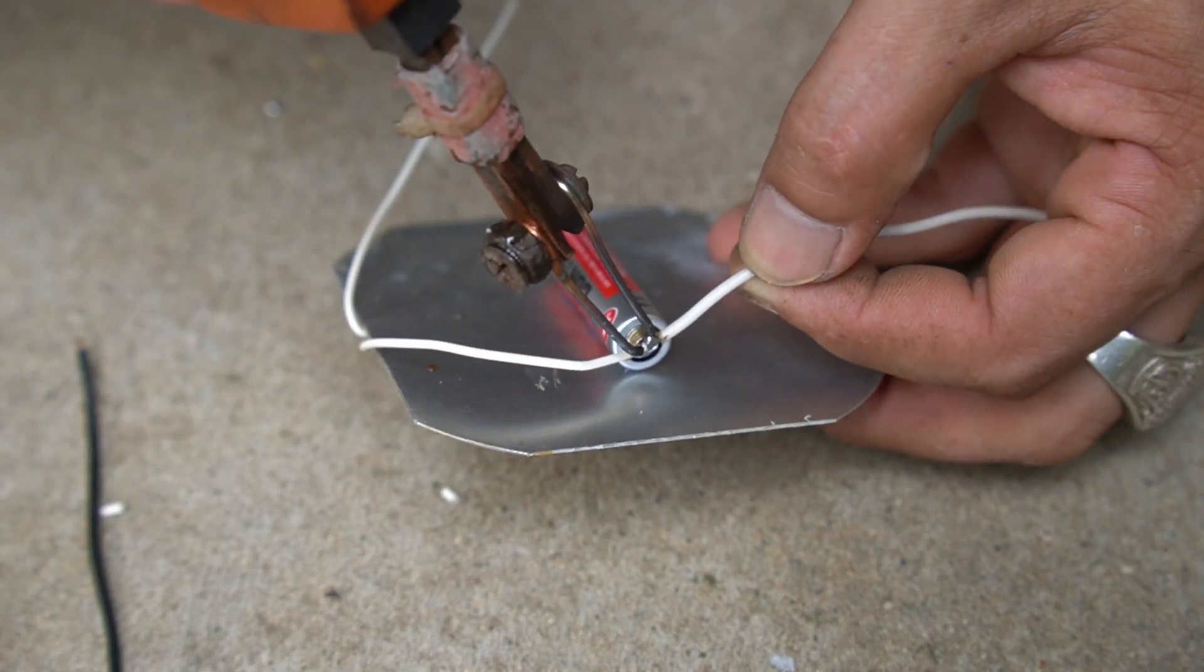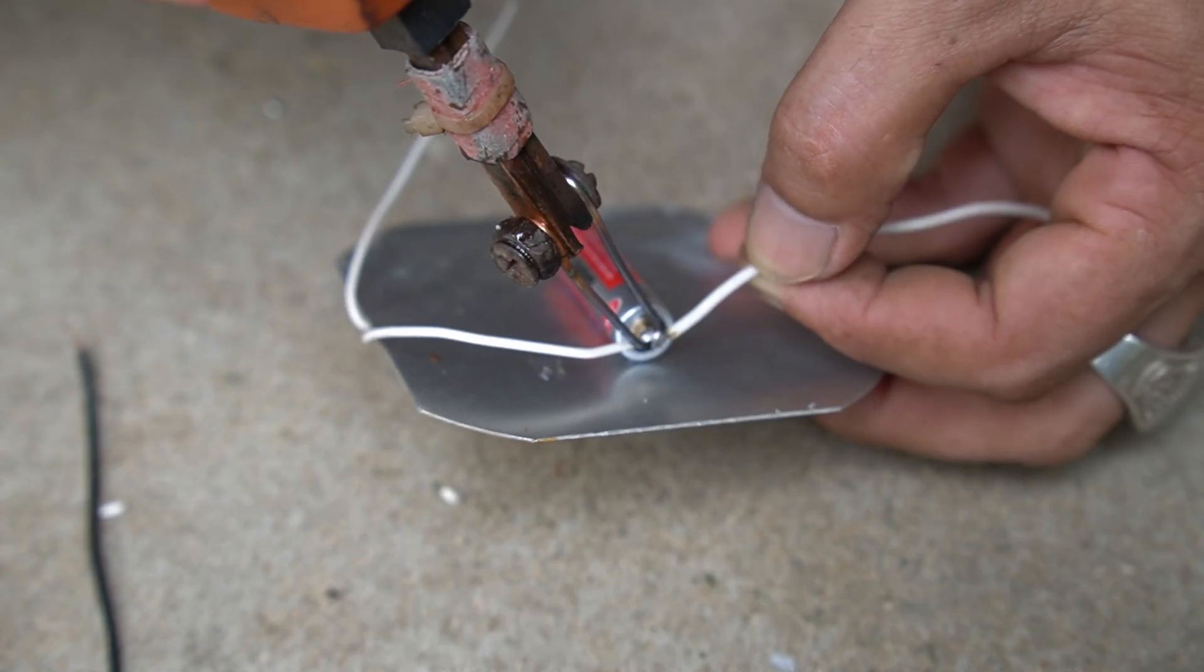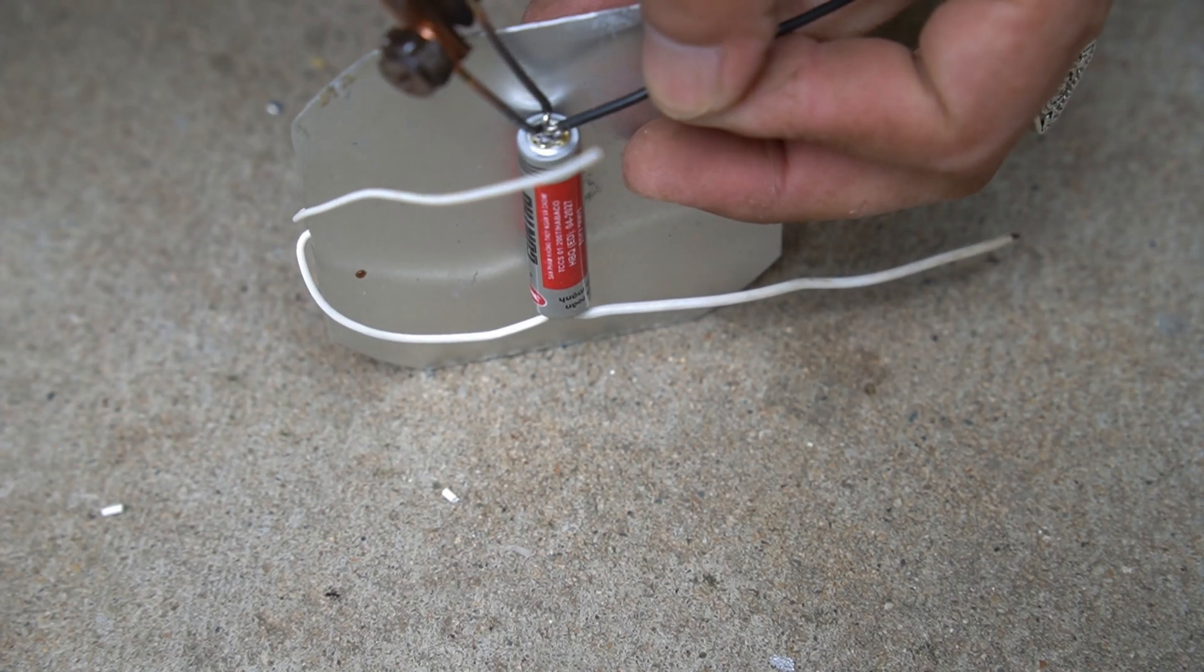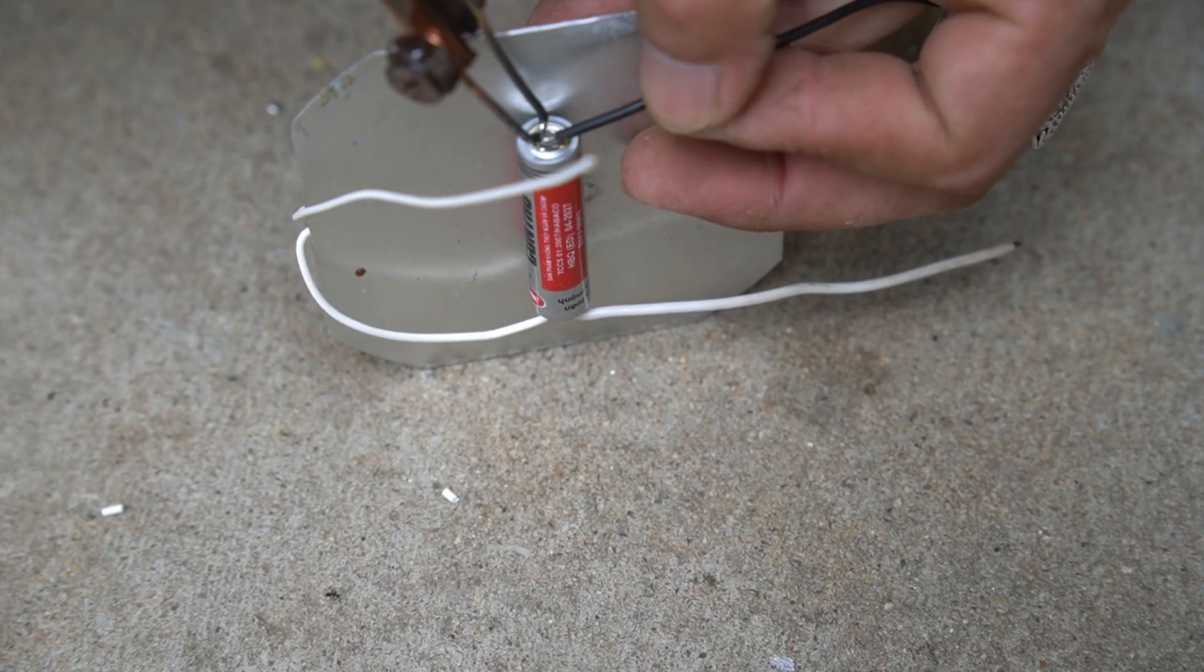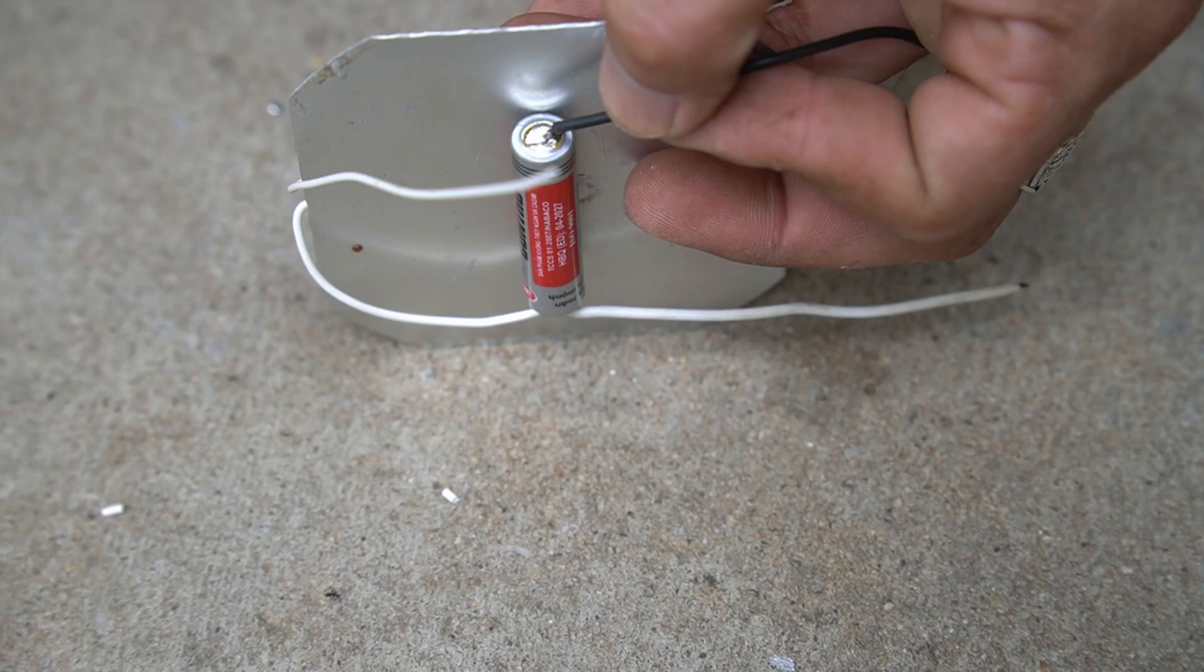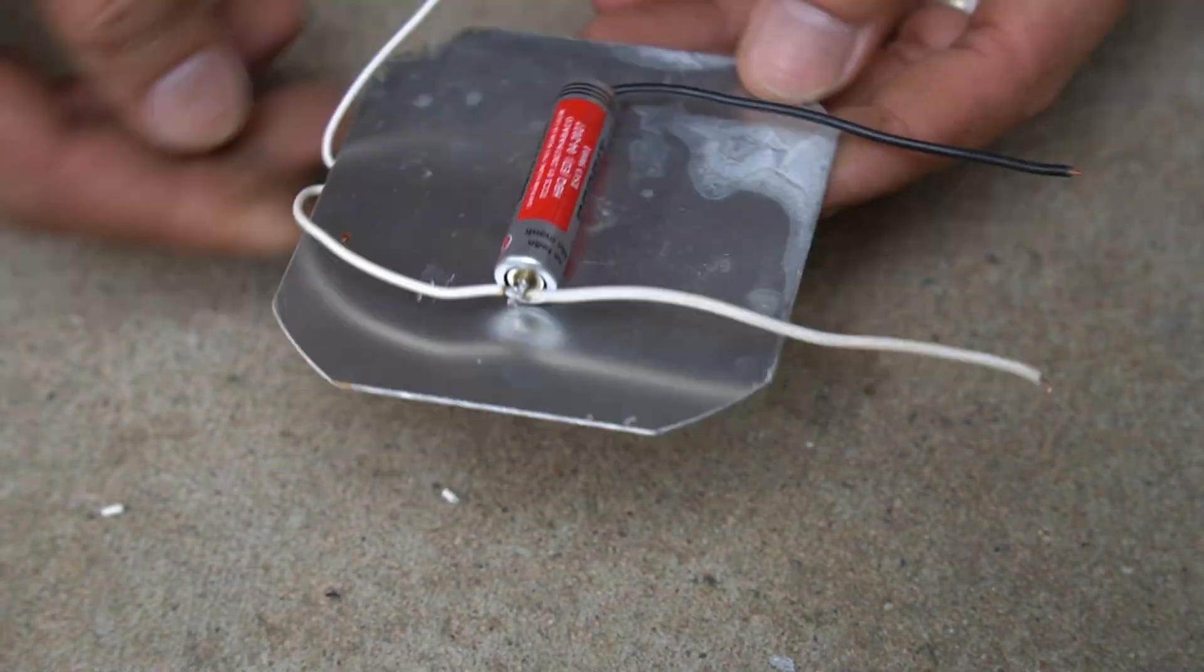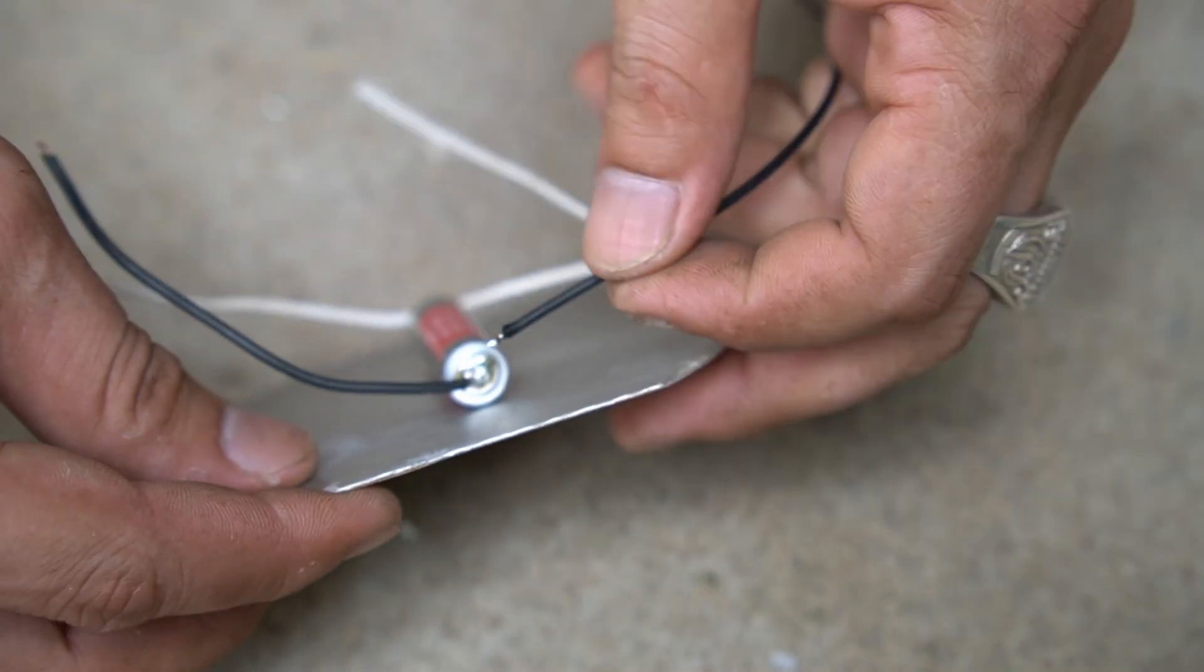I soldered two more wires to the battery. Note: use two different colored wires to easily distinguish the polarity of the battery.